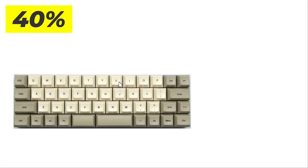For example, page up, page down, print screen, home, end — and holding down the red Fn1 key gives you access to the number row, the function keys and brackets.